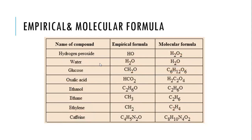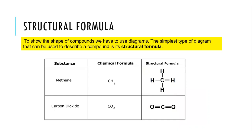By looking at empirical and molecular formula, we cannot understand how a compound looks — what is the shape? So we are using another type of chemical formula. We discussed molecular formula — actual numbers of atoms. Empirical formula — simplified ratio of atoms. The third one shows the shape — that's what we call structural formula.